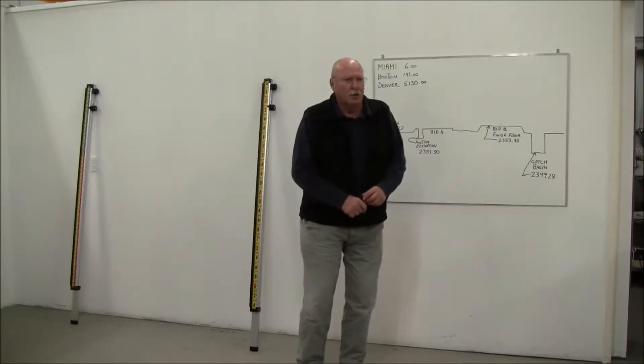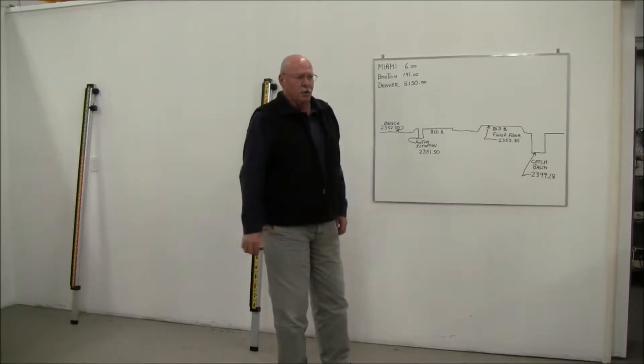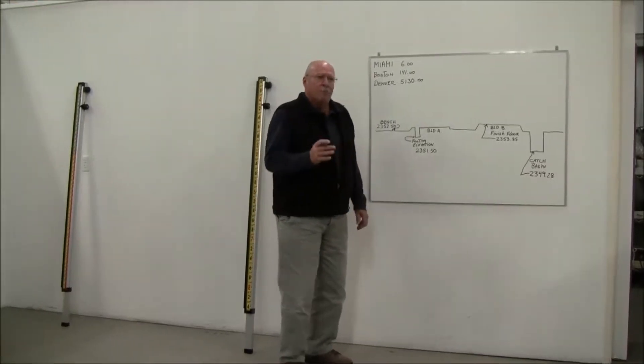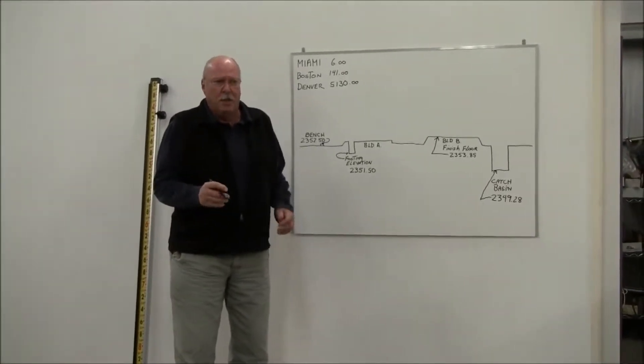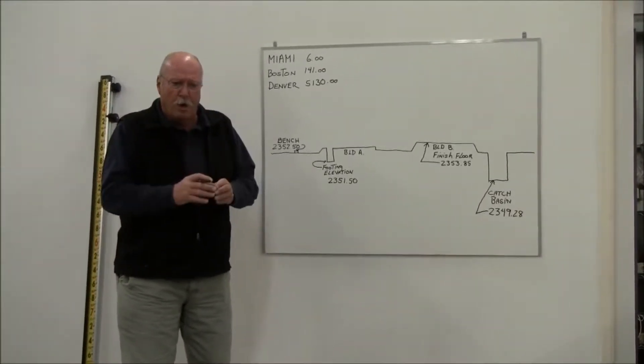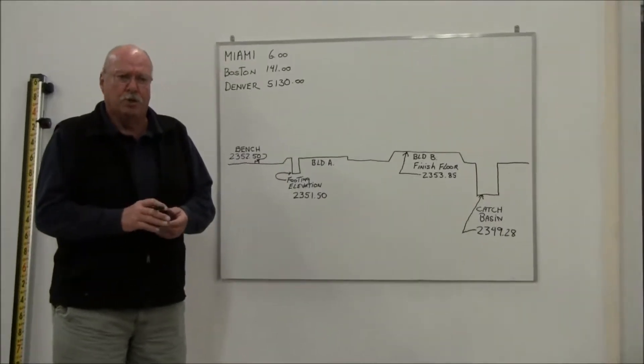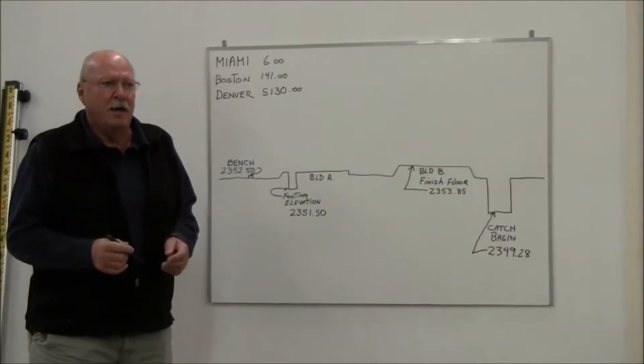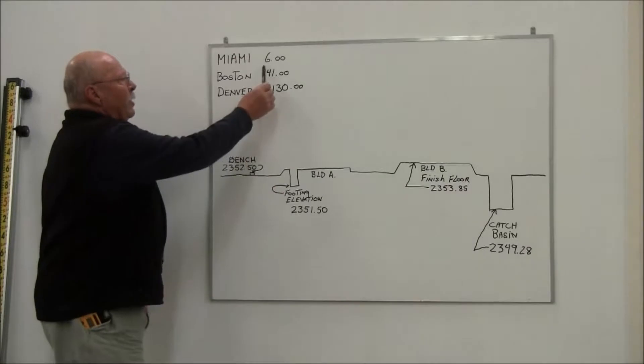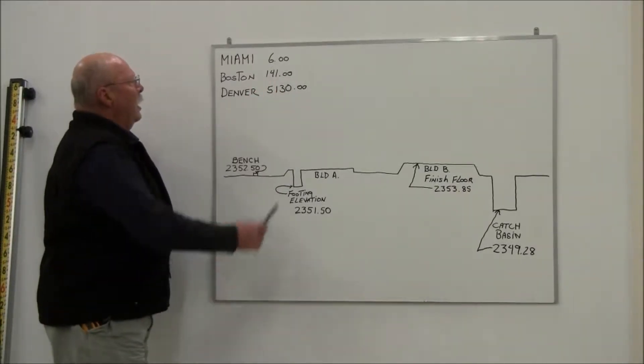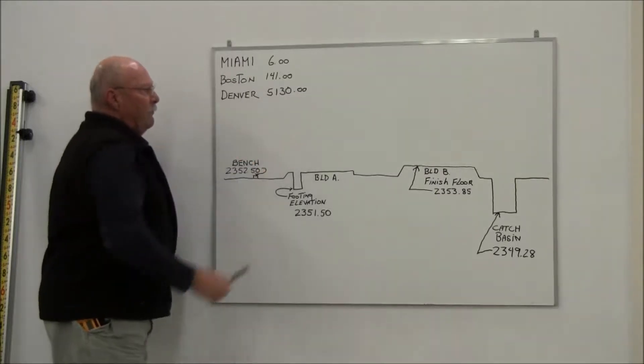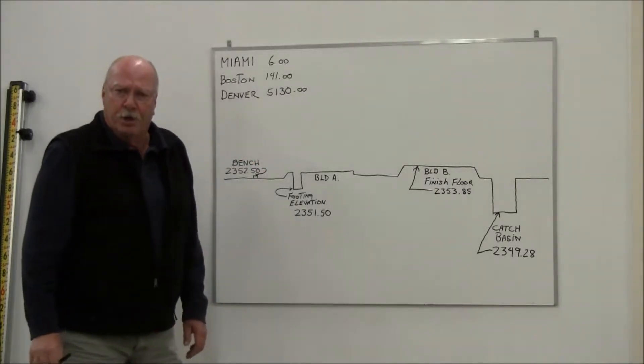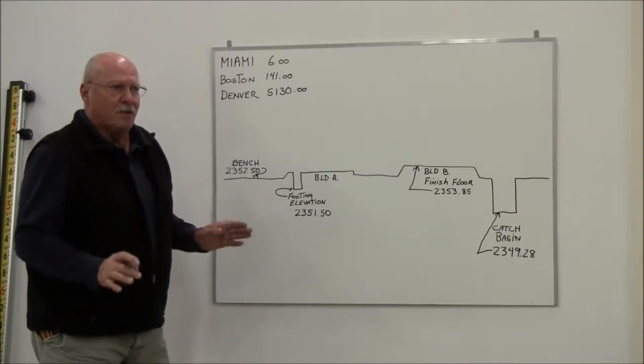Let me start with illustrating a little bit about how those elevations come about. When a job is set up, typically the job is going to be depicted in true elevation with a starting point which is called your benchmark. And that benchmark, for example, if you're in Miami could be 6 feet. If you're in Boston, it could be 141 feet as your starting point. If you're in Denver, it could be 5,130 or anywhere in between.